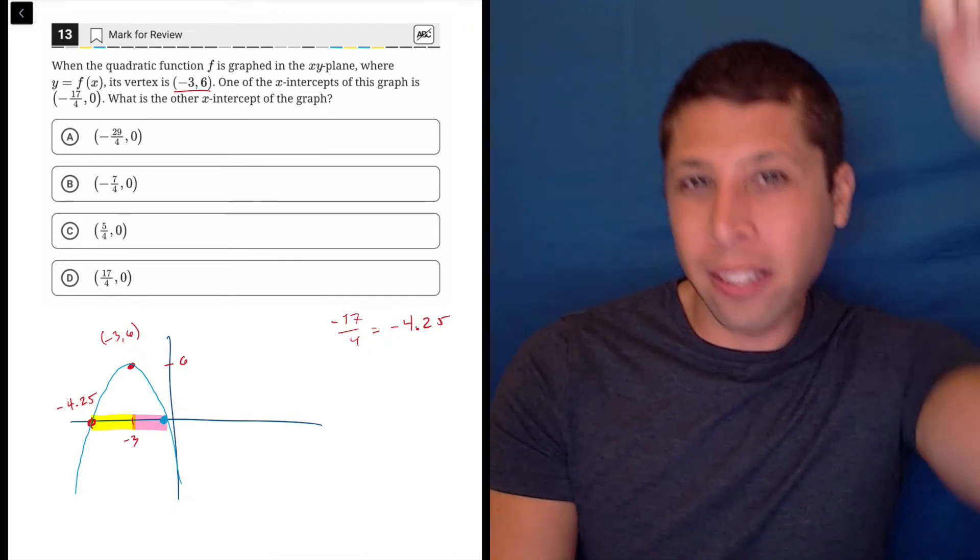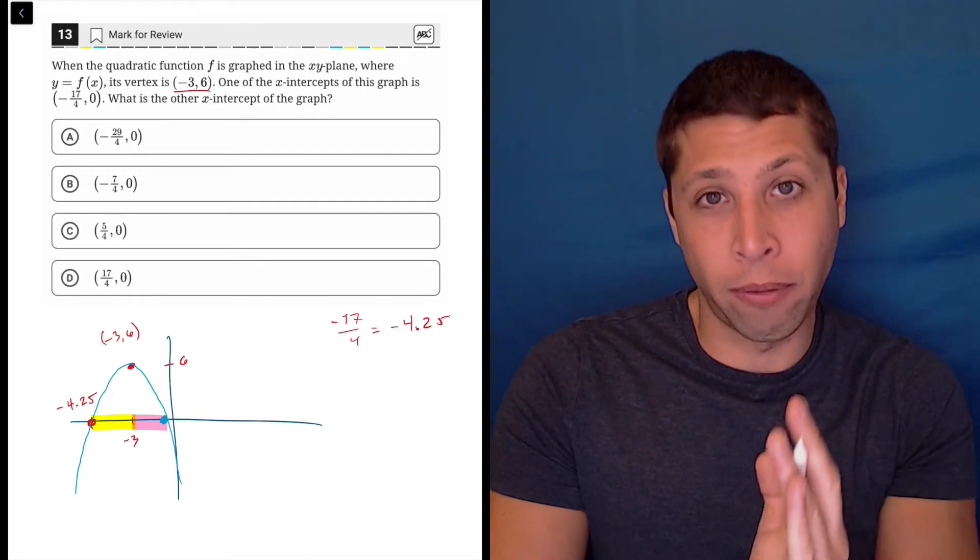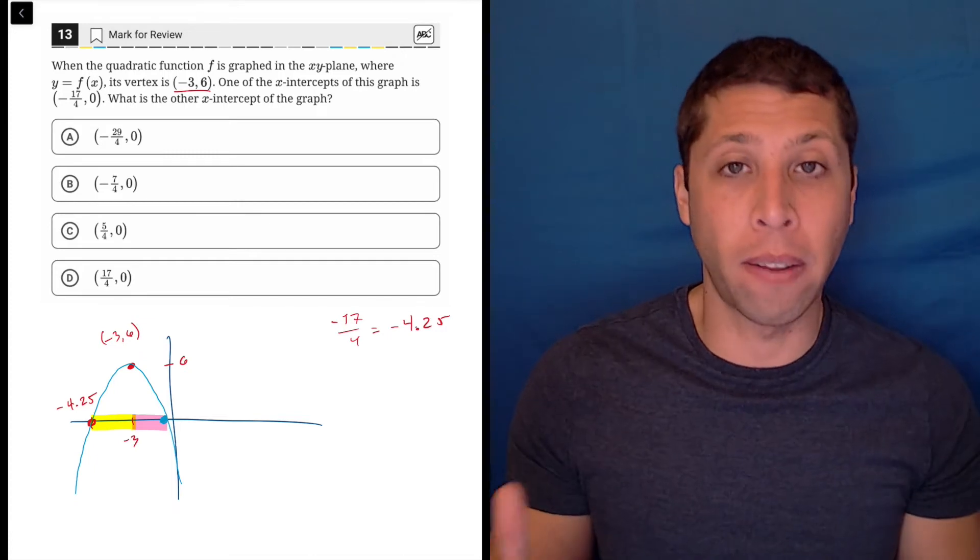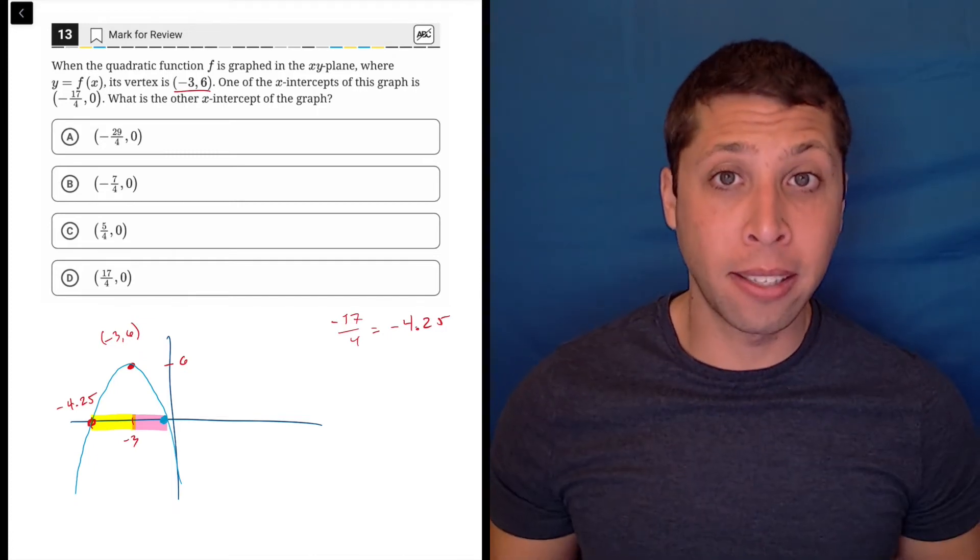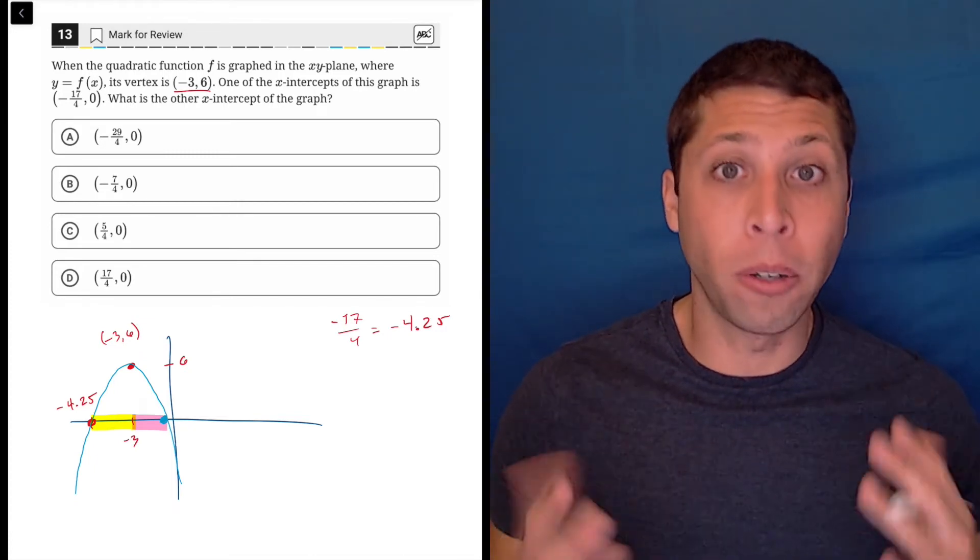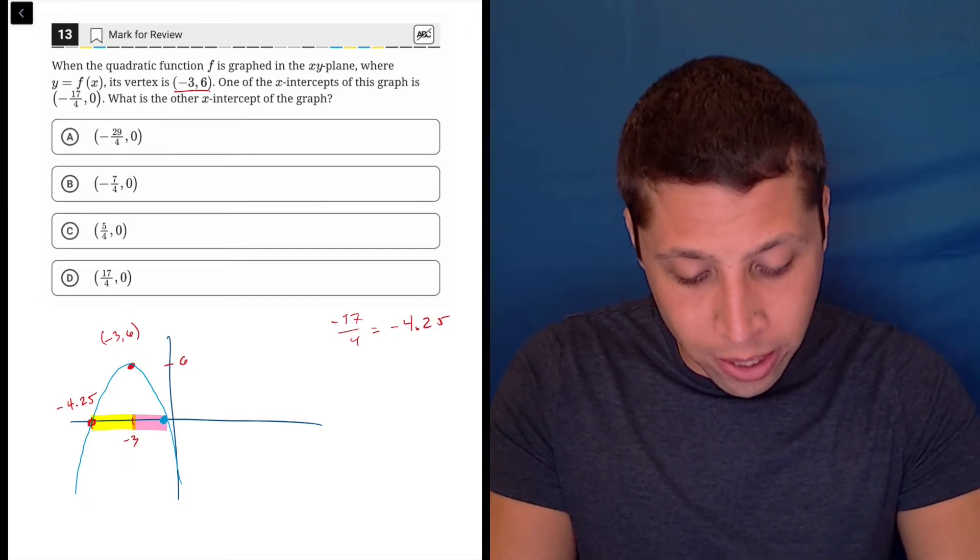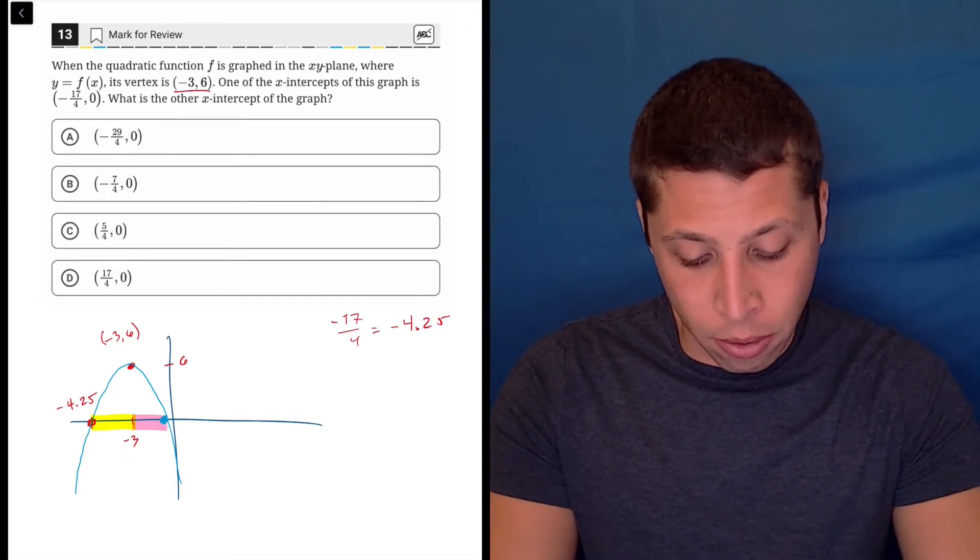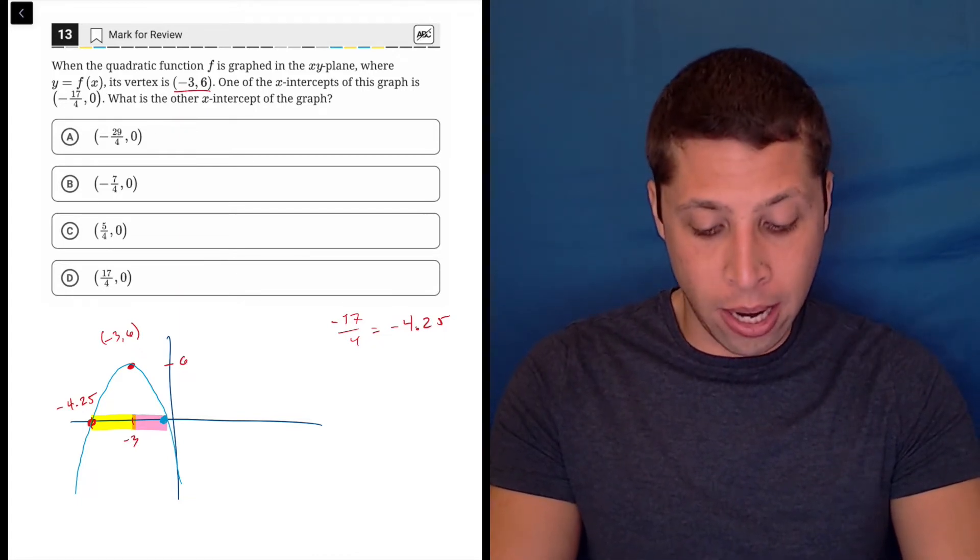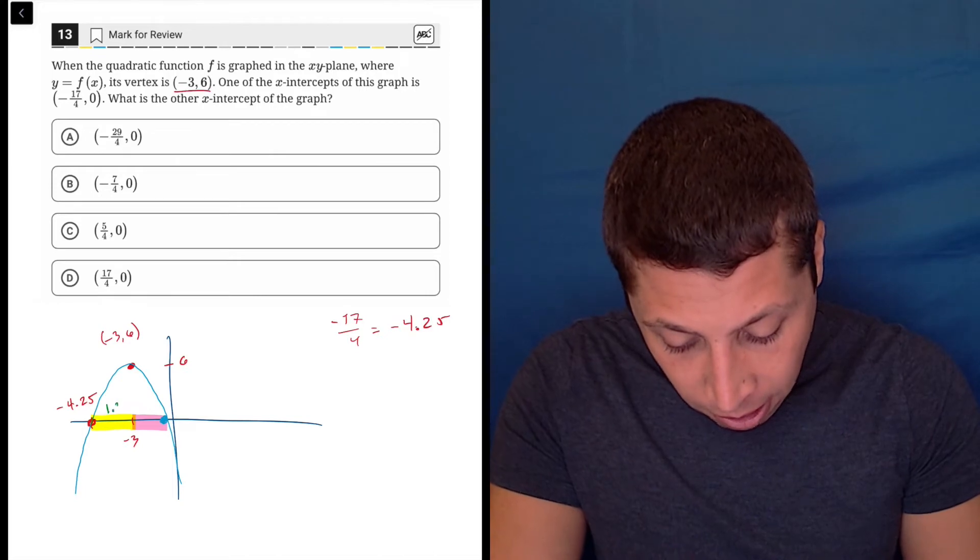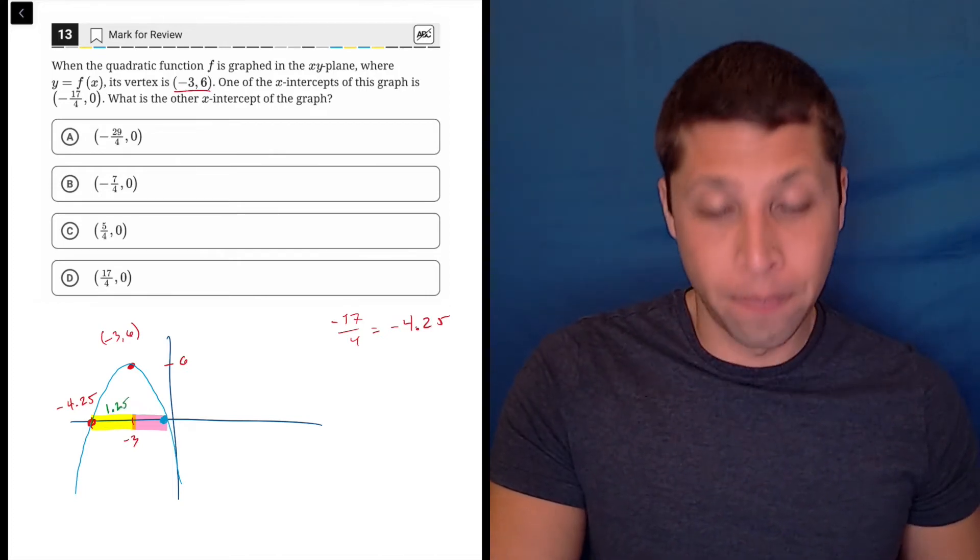So it doesn't matter if the vertex is up. I really only care about the x-coordinate to that vertex. That is kind of like the middle of my parabola. Everything kind of revolves around that. Sometimes we call that the axis of symmetry. And it's important because it creates a mirror image. So what I need to know is what is the distance of that yellow highlighting. How do I get from negative 3 to negative 4.25? That's a distance of 1.25.